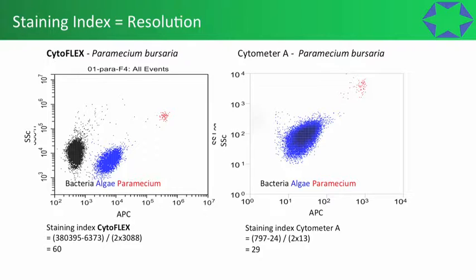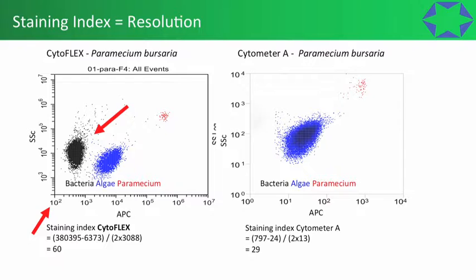On the CytoFLEX we've got the paramecium containing algae shown here, the free algae, and the bacteria — the bacteria are there because when paramecium don't get enough sugars from the algae, they chomp on bacteria. Comparing the CytoFLEX to a different flow cytometer, we can see the benefit of the CytoFLEX's huge dynamic range: a seven log decade range starting at 10² up to 10⁷. We could even see something below the bacteria shown here — there's space within this dynamic scale to see even smaller things.